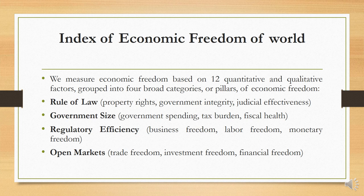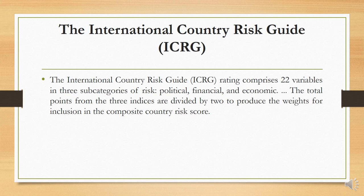The Index of Economic Freedom of the World measures economic freedom based on 12 quantitative and qualitative factors grouped into four broad categories or pillars of economic freedom. These four pillars are: Rule of Law, Government Size, Regulatory Efficiency, and Open Markets. Rule of Law includes property rights, government integrity, and judicial effectiveness. Government Size includes government spending, tax burden, and fiscal health. Regulatory Efficiency includes business freedom, labor freedom, and monetary freedom. Open Markets includes trade freedom, investment freedom, and financial freedom.